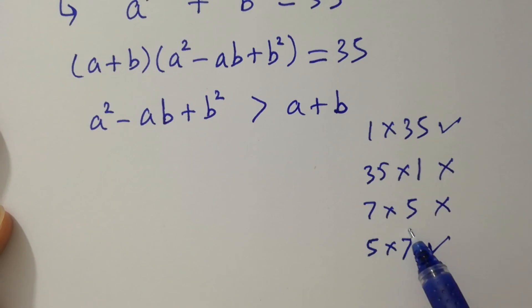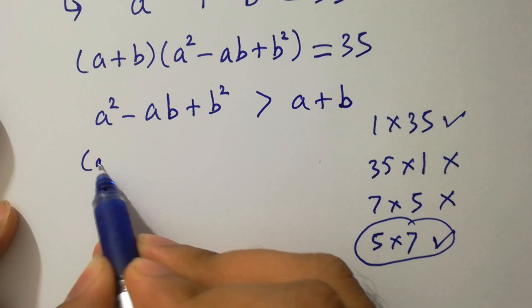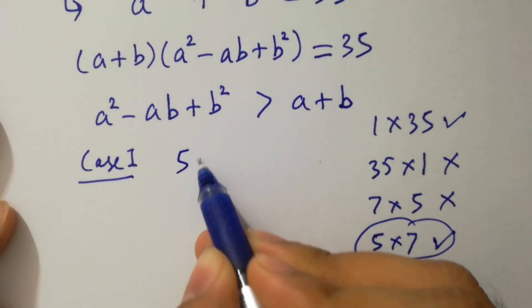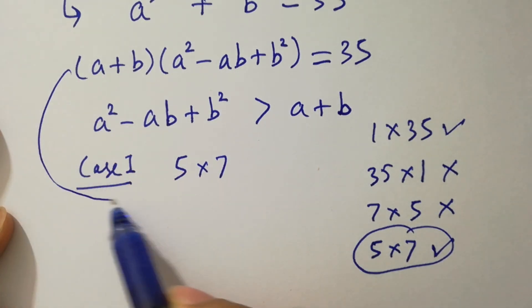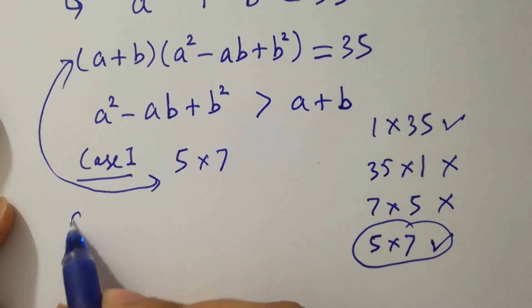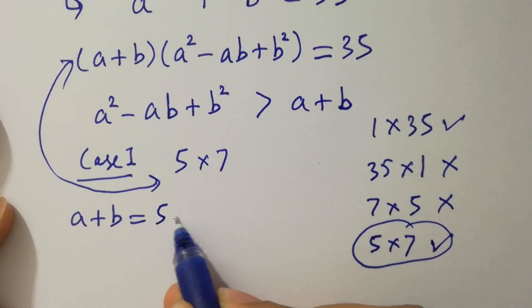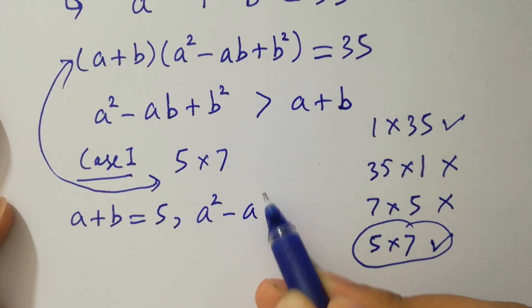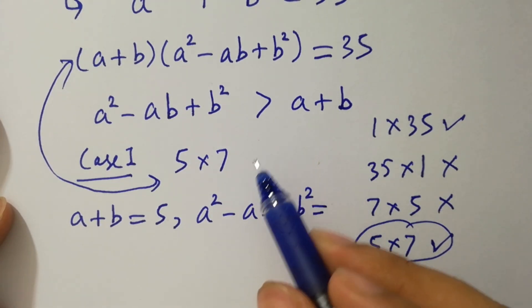So we take the case of 5 times 7. By comparing, we have a plus b equal to 5 and a square minus ab plus b square equal to 7.